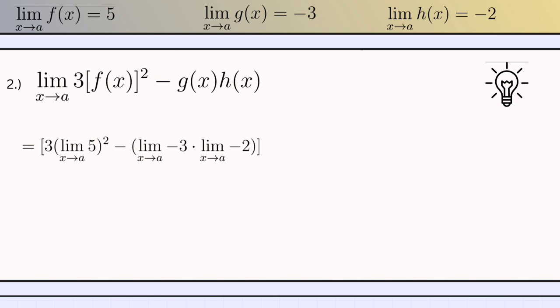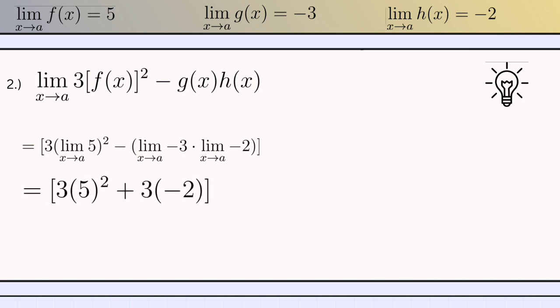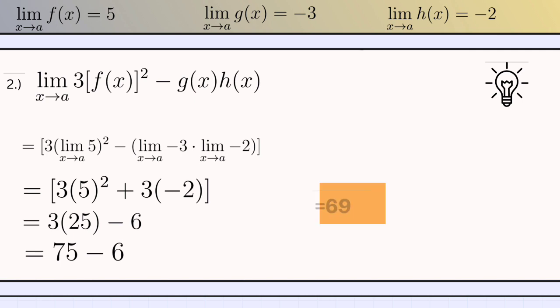Here we can see that positive 3 is on the left side of the limit of 5 as x approaches to a, because according to theorem number 3, k times f of x as x approaches to c is equal to k times the limit of f of x as x approaches to c. Now, using theorem number 1 where the limit is the constant itself, our answer would be 3 times 5 squared minus 3 times negative 2. Simplifying: 3 times 25 minus 6 equals 75 minus 6, and the answer would be 69.